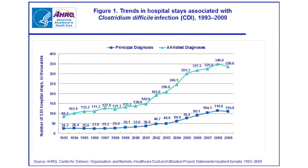These are the infection rates per hospital stay for C. diff over time in the U.S. You'll note a bit of an uptick starting around the year 2000.